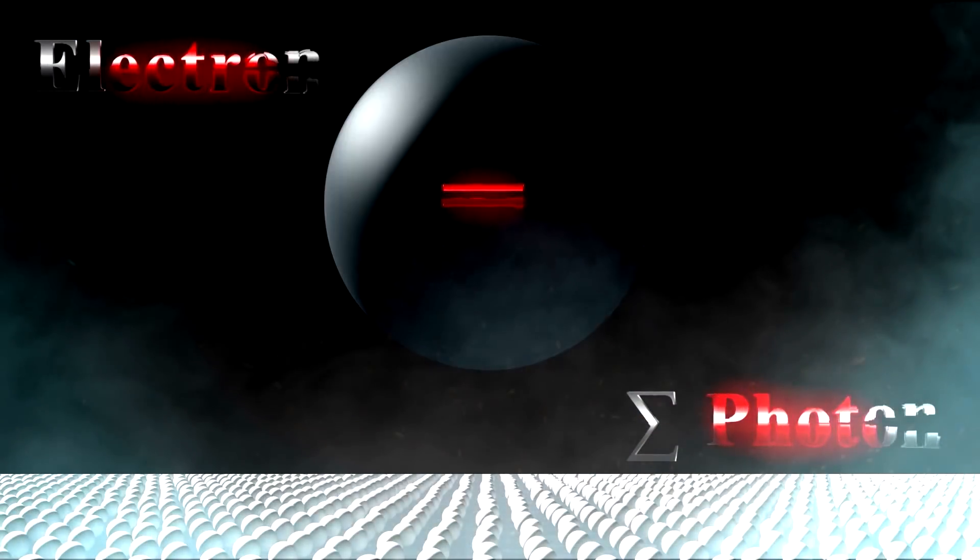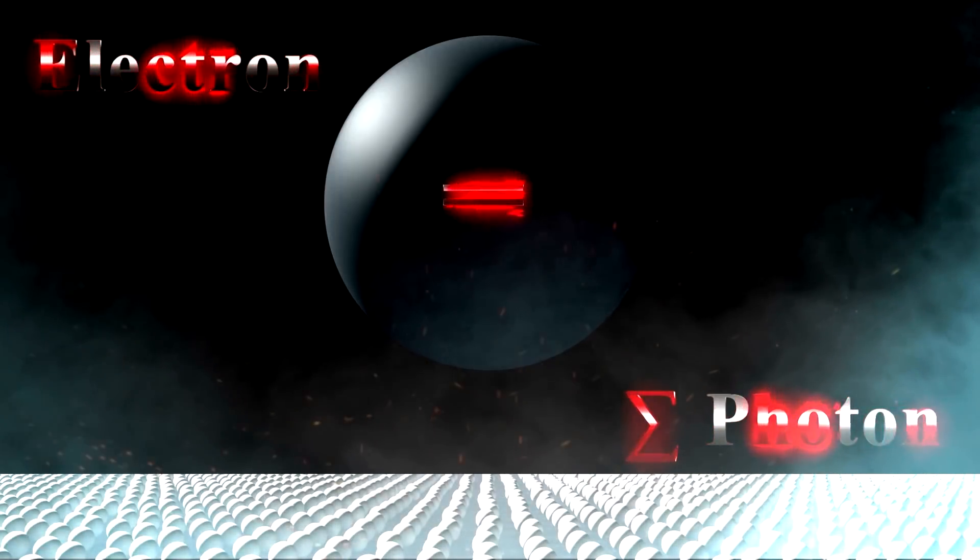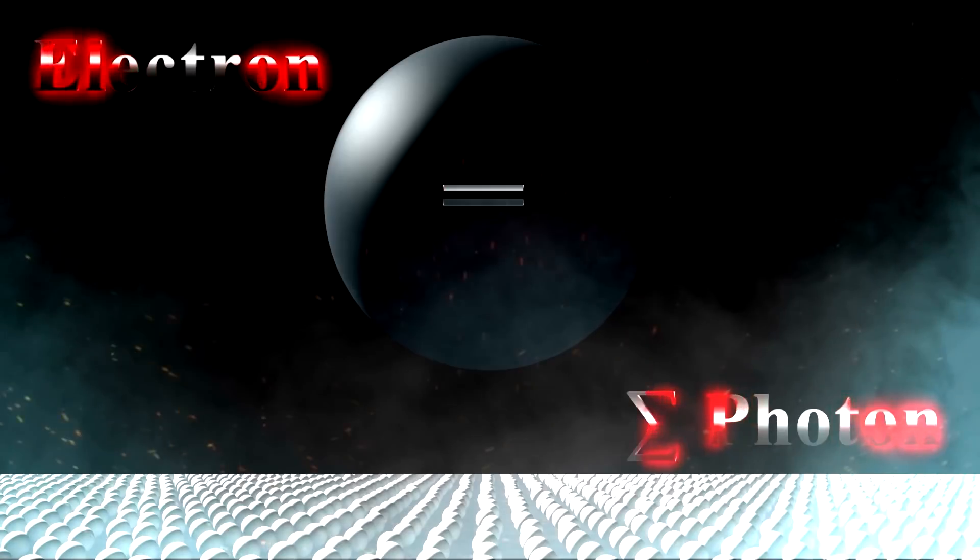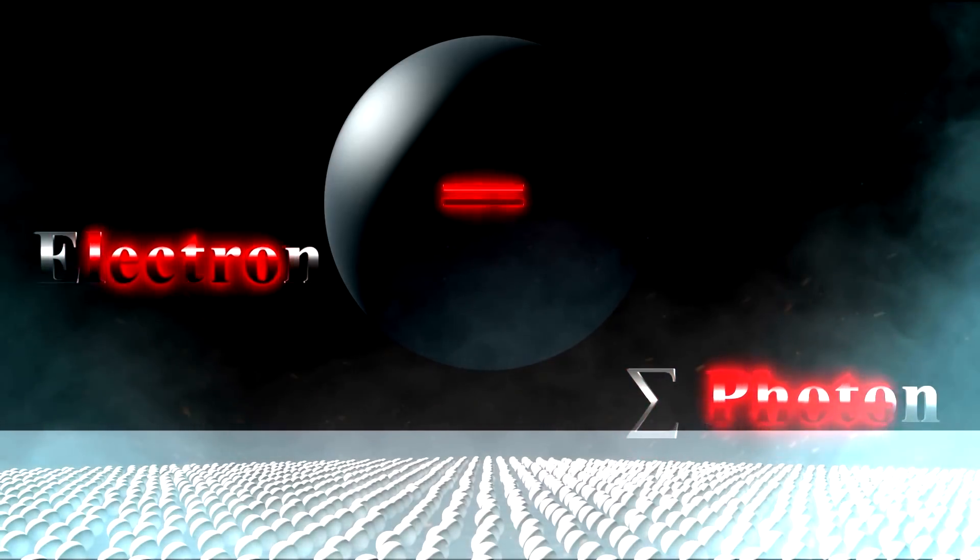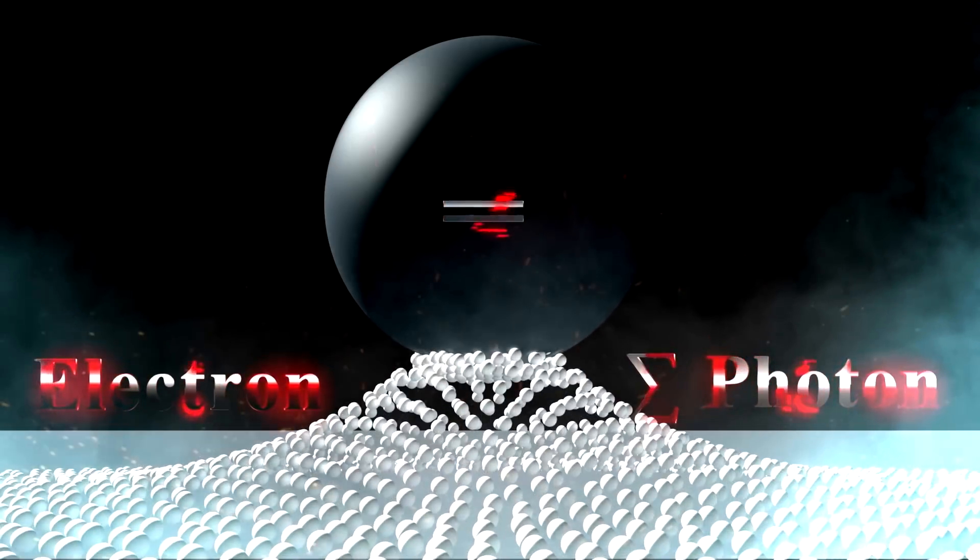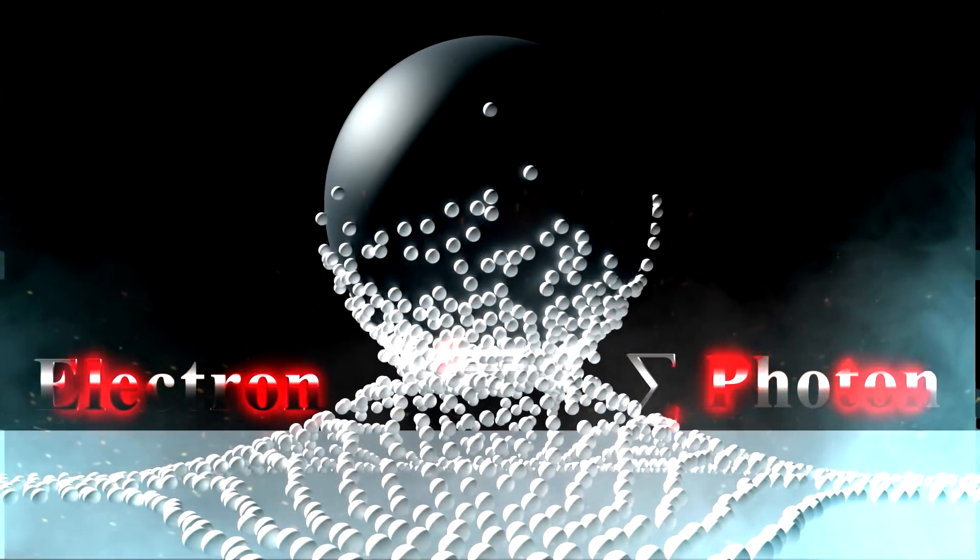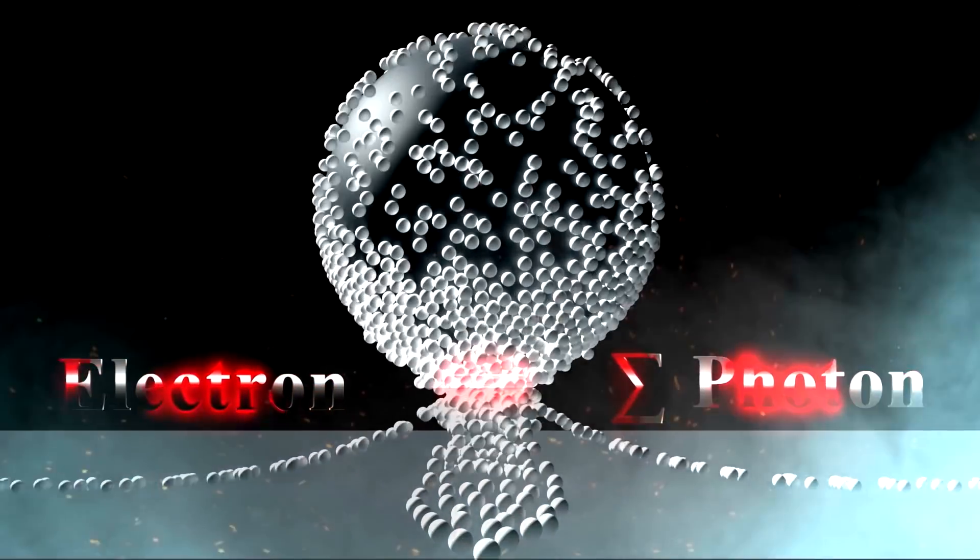You see, the electron is the birthplace or even the generator of photons. And you could say that the electron's structure consists of the photons gathered together.